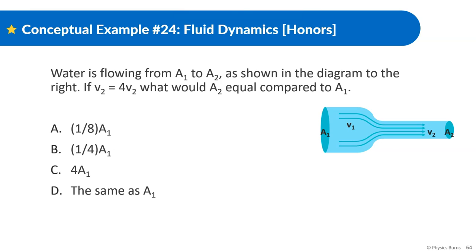Water is flowing from A1 to A2 as shown in the diagram to the right. If v2 is equal to four of v1, what would A2 equal compared to A1? So very similar to the last one. I highly suggest pausing this if you could not figure out the other one, or if you did figure it out, pausing it as well. But again, we have this formula here. V2 is equal to four, oh, this is four of v1. Sorry about that.